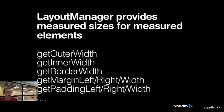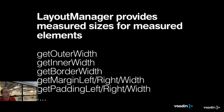A few other things the layout manager provides: measurements. The layout manager, for all the elements it measures, will also provide features like border, margin, padding, outer width, and inner width. Outer width is basically inner width plus all the border, margin, and padding. These will be really fast operations you can use in your layout method because they're already calculated when the layout manager measured the elements.